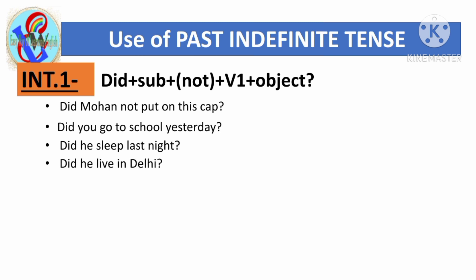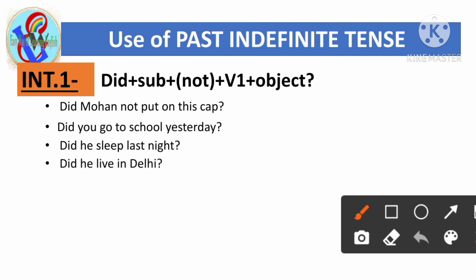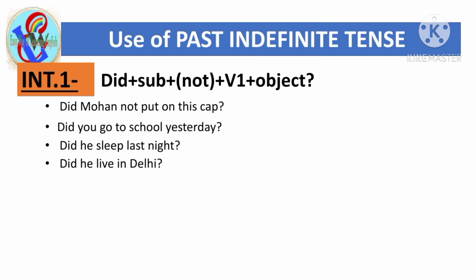'Did he live in Delhi?' Here too, 'did' is used first, then the subject 'he', then the first form of the main verb 'live', and 'in Delhi' is the place.